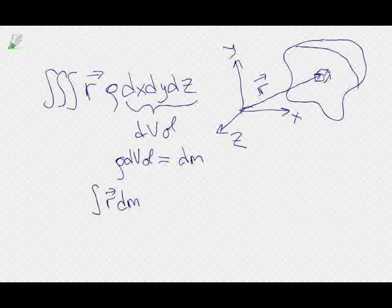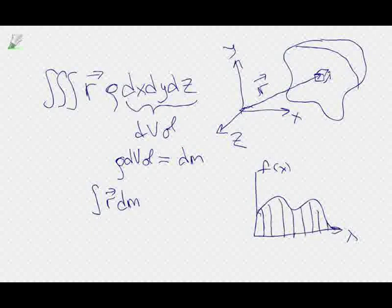I know you probably got used to thinking of it as an area under a curve. If you have f of x and you divide it into a whole bunch of little delta-x width rectangles, then f of x times delta-x is the area of that one rectangle, and then you add up all those rectangles to get the area under the curve. The area under the curve is actually a special interpretation of the more general interpretation of an integral as a sum — a Riemann sum. An integral is a sum.